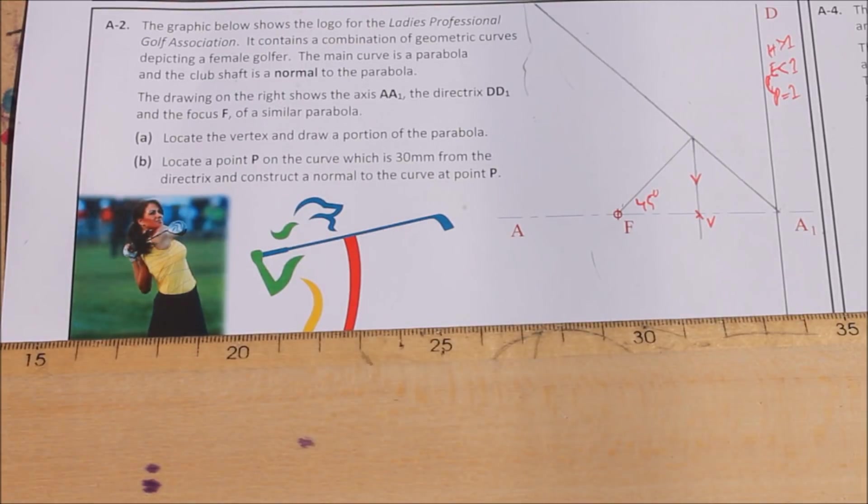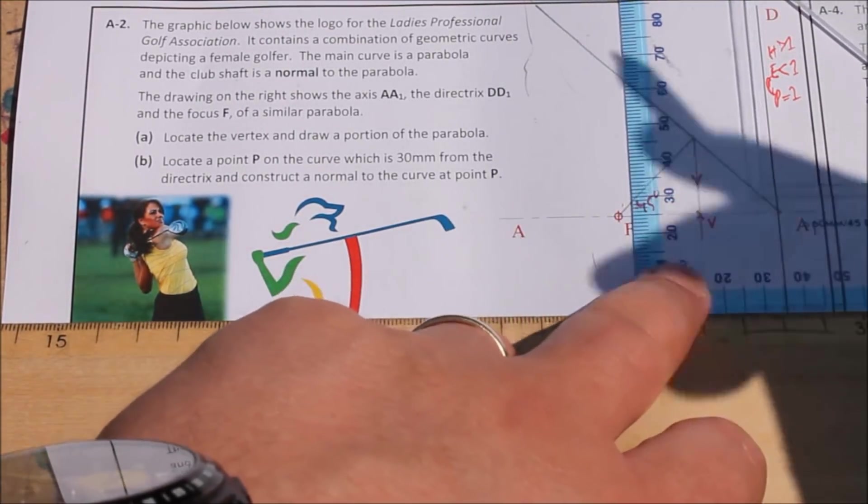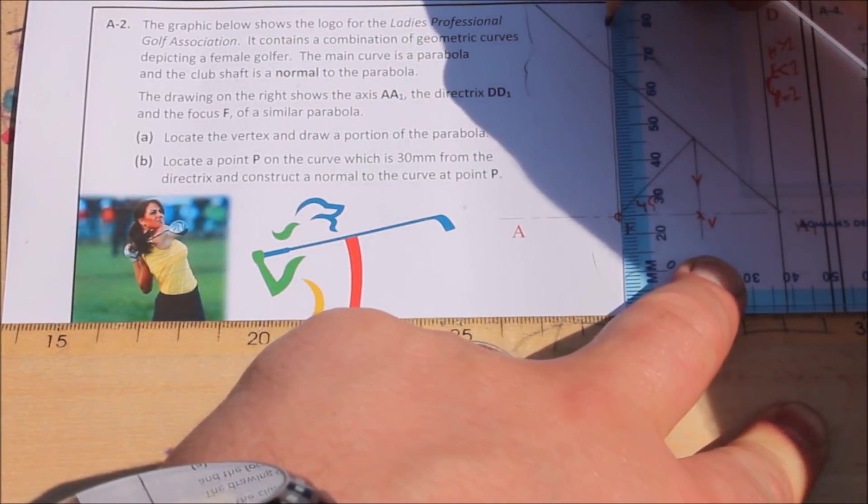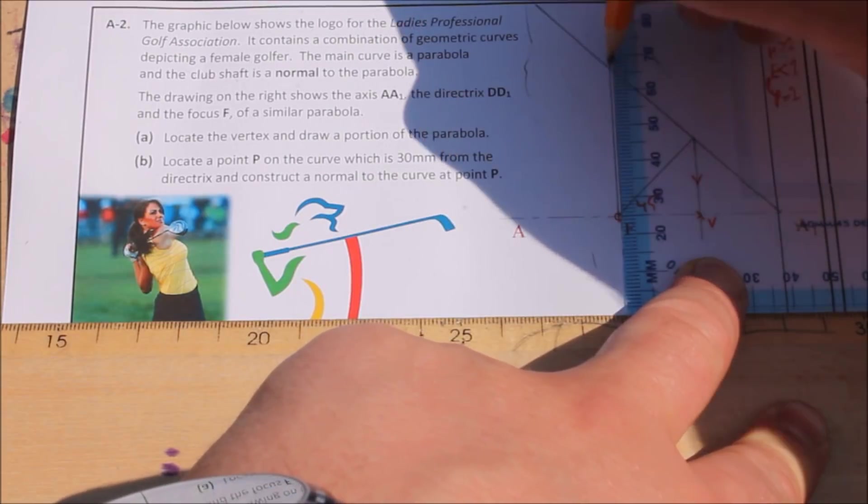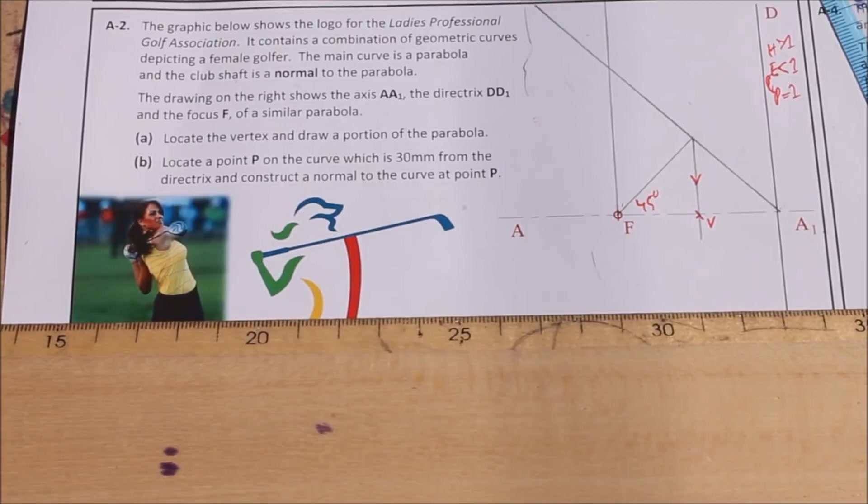Once we've done that now, let's get a few points on our parabola. And it says draw a portion. We'll do the top part here first. So draw a line straight up from your focal point. Give you a focal line. Where that meets your line of eccentricity, that gives you a point on the curve.